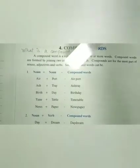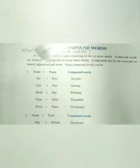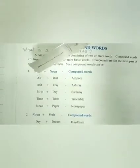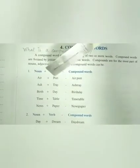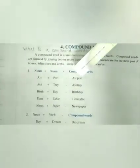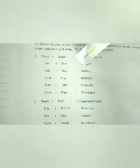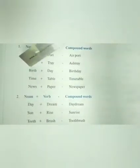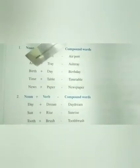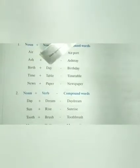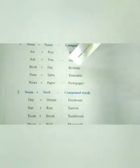Noun plus noun compound words. This means: noun plus noun. For example, 'air' noun plus 'port' noun gives us 'airport'. 'Ash' noun plus 'tray' noun gives us 'ashtray'. 'Birth' noun plus 'day' noun gives us 'birthday'.